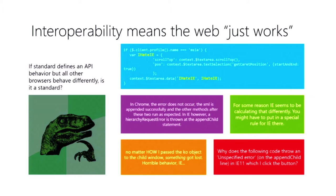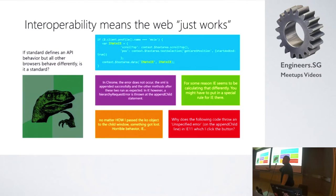The guy who developed that code joined the Web Summit 2015 and admitted that some of the IE specification is actually correct — it should return an error. Chrome, Safari, and Firefox made a consensus not to generate the error. So IE also agreed and removed it, and it became a standard. A lot of JavaScript workarounds exist because of that kind of thing.